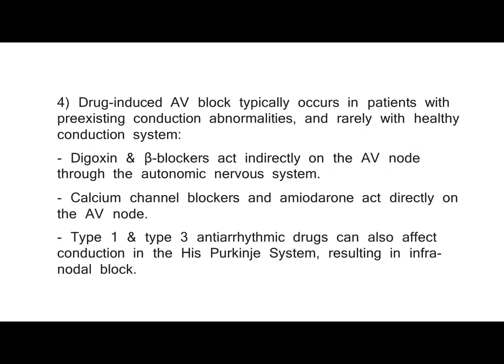Drug-induced AV block typically occurs in patients with pre-existing conduction abnormalities, and rarely with a healthy conduction system. Digoxin and beta blockers act indirectly on the AV node through the autonomic nervous system. Calcium channel blockers and amiodarone act directly on the AV node. Type 1 and type 3 antiarrhythmic drugs can also affect conduction in the His-Purkinje system, resulting in infranodal block.